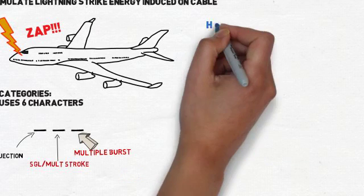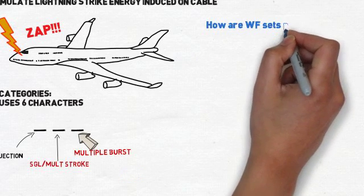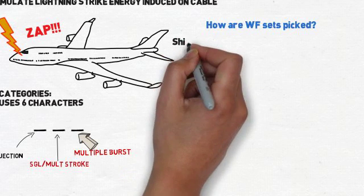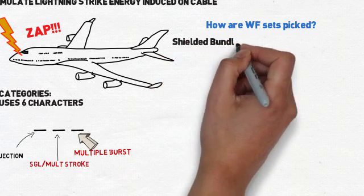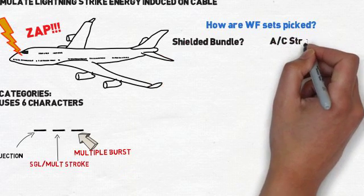Your waveform sets are typically determined by one of two things. One, if you have shielded bundles in your aircraft wiring harness. And two, the structure of the aircraft in your product location.